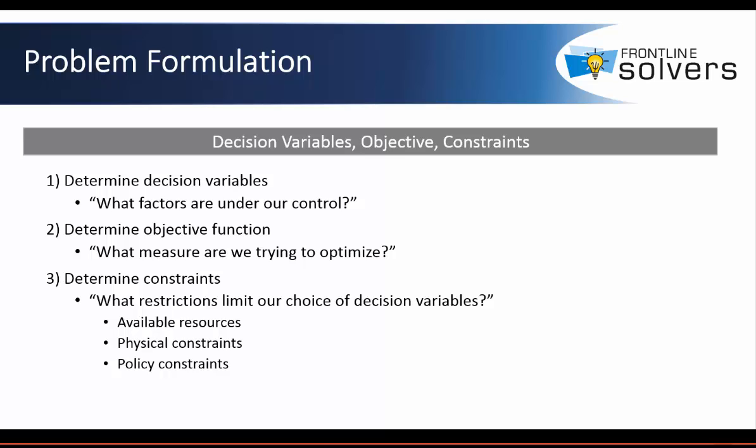There are three components each optimization problem involves. First, one or more decisions that must be made — you can approach them with the question: what factors are under our control? Another common element is the existence of some goal or objective that the decision maker considers when deciding which course of action is best. You can determine the objective function by asking: what measures are we trying to optimize? And in each problem, constraints are placed on the alternatives available — you can ask: what restrictions limit our choice of decision variables? Now let's find out how this is implemented in our transportation problem.